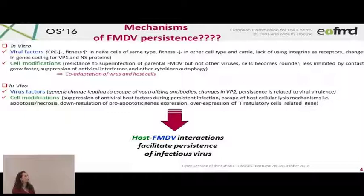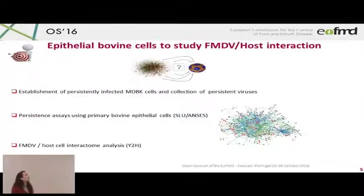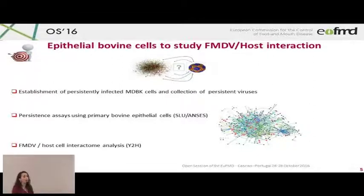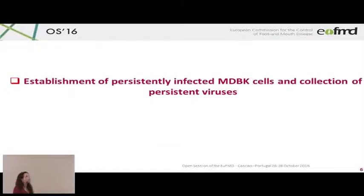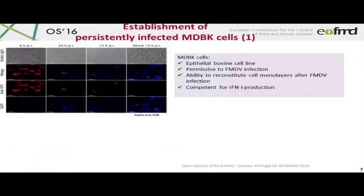Overall, there are many clues for FMDV host interactions that facilitate persistence of infectious virus, and this is why I present this work. We are interested in studying epithelial bovine cells persistently infected by FMDV. Our study has three parts: first, we established persistent infection in the MDBK cell line and collected persistent viruses; second, we moved to primary bovine epithelial cells in collaboration with Jean-François and Sarah England at SLU in Sweden; and third, we have an ongoing project on interactomic analysis of FMDV host interactions.